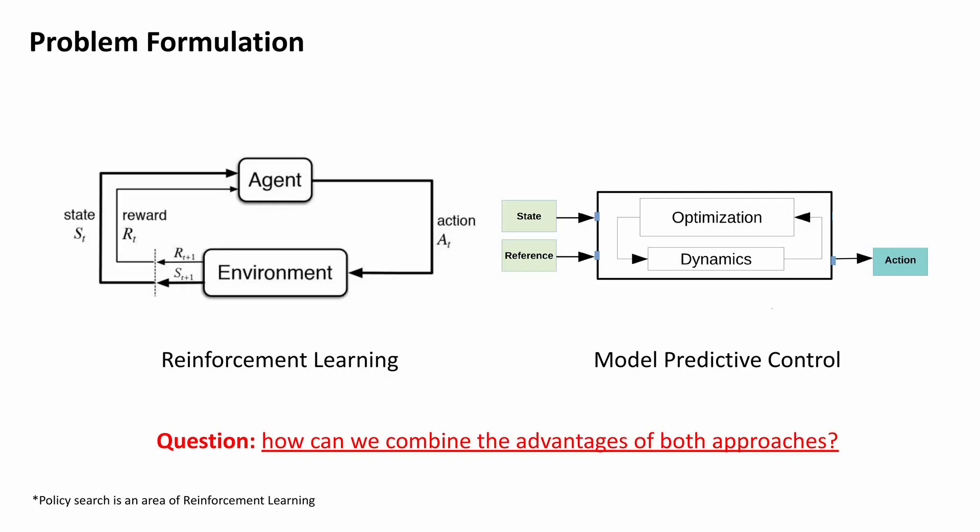Policy Search and model predictive control are two different paradigms for robot control. Policy Search has the strength of automatically learning complex policy using experienced data, while MPC can offer optimal control performance using dynamic models and trajectory optimization. An open research question is how to leverage and combine advantages of both approaches.